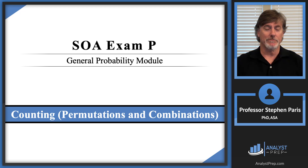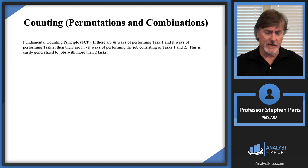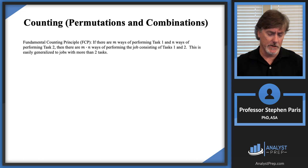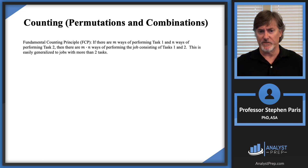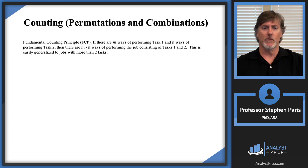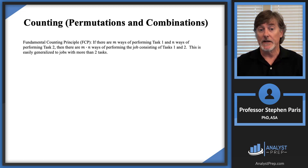In this video we're going to talk about counting — in particular, permutations and combinations. Before we do that, let's discuss something called the Fundamental Counting Principle. It states that if a job is broken into tasks, and there are m ways of performing the first task and n ways of performing the second task, then you multiply m times n to get the total number of ways of completing the job. This generalizes easily to more than two tasks.